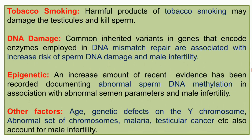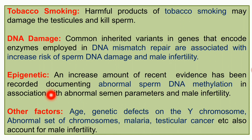Tobacco smoking is another cause — harmful products can damage the testicles and kill sperm. DNA damage is also a factor: inherited variants in genes encoding enzymes used in DNA mismatch repair are associated with increased risk of sperm DNA damage and male infertility. Epigenetic factors — abnormal sperm DNA methylation — are associated with abnormal semen parameters. Other factors include age, genetic defects on the Y chromosome, abnormal chromosomes, malaria, and testicular cancer.